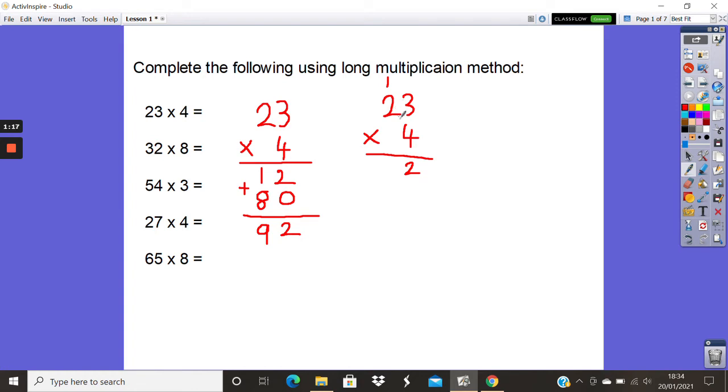So you've got 2 tens times 4 which would be 8 tens. Add 1 more would be 92. So you get the same answer. Use whichever method you feel more comfortable with to work out the rest of them. Pause this video to give yourself a chance to work them out.